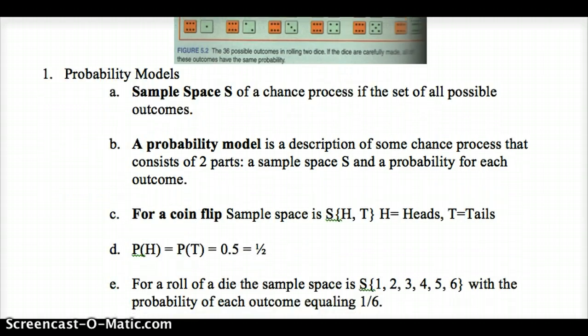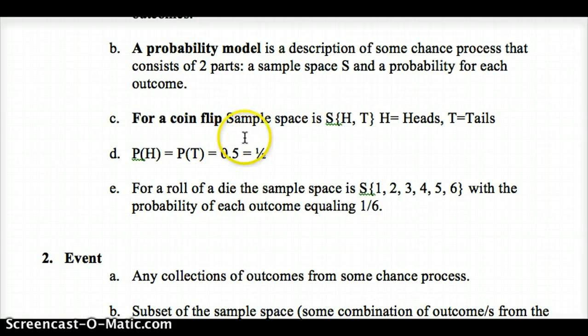To define our sample space, for our coin flip, we'd have a sample space of HT for heads and tails, for the flip of one coin. The probability of heads equals the probability of tails. We have one possible tail out of two possibilities, one possible head out of two possibilities. For a roll of a single die, our sample space would be represented by S = {1, 2, 3, 4, 5, 6}. A fair die would give us each of those opportunities in the sample space a 1/6 chance of occurring.